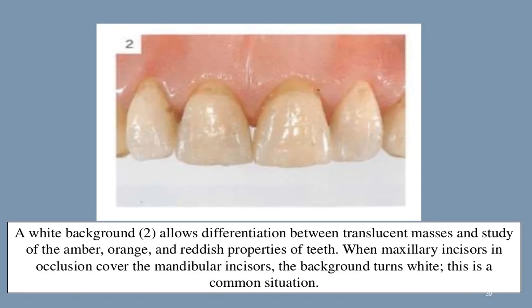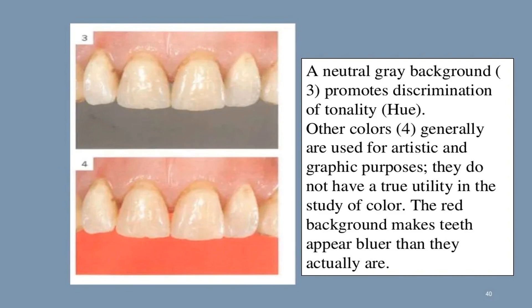A white background allows differentiation between translucent masses and study of amber, orange, and reddish properties of teeth — it is a common situation when maxillary incisors in occlusion cover mandibular incisors. A neutral gray background promotes discrimination of tonality and hue. Other colored backgrounds are generally used for artistic and graphic purposes and do not have true utility in color study; for example, a red background makes teeth appear bluer than they actually are.